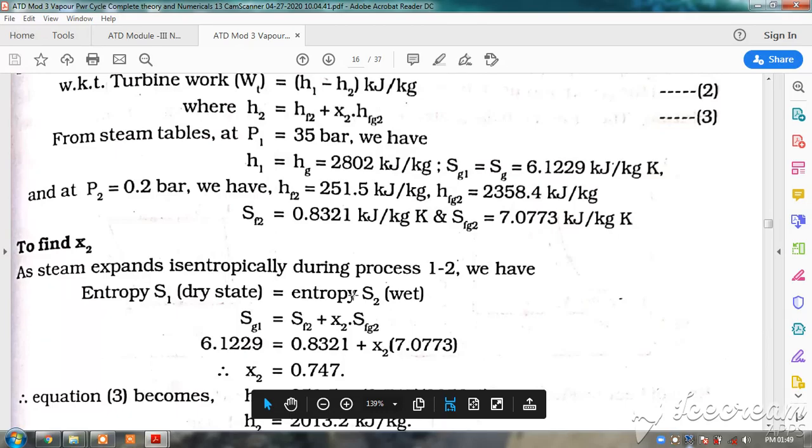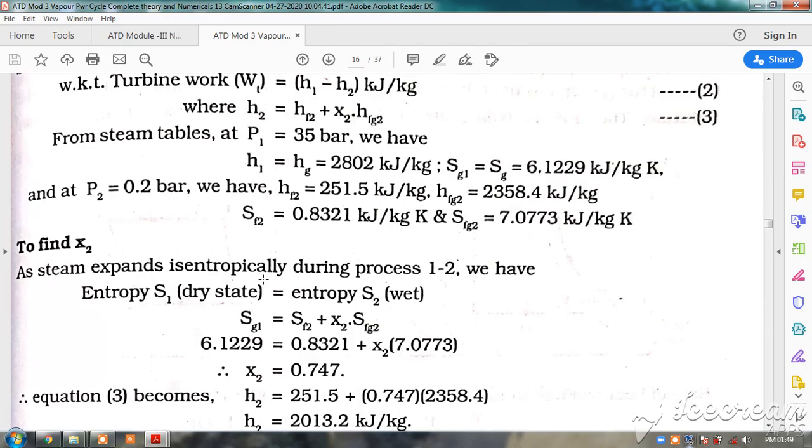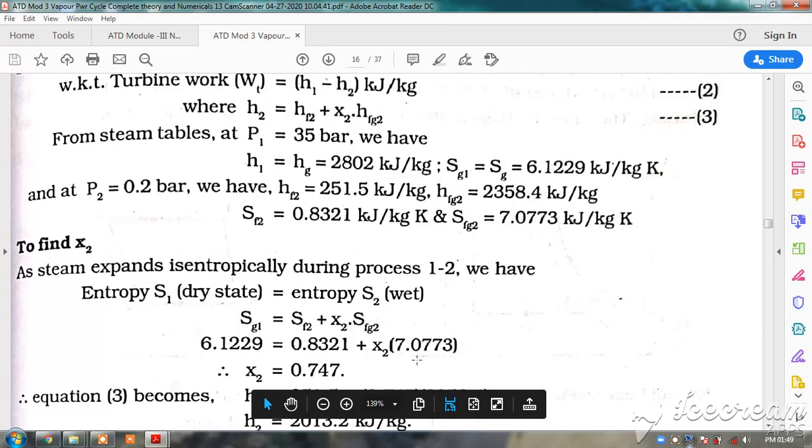always we will take the entropy at 1 is equal to entropy at 2 when the steam enters in dry saturated state in the turbine. So these values are available: S1, Sg1 is available, Sf2 is available, Sfg2 is available. This S1 is at saturated vapor and Sf2 is the fluid, saturated fluid, and this is the latent heat into dryness fraction.